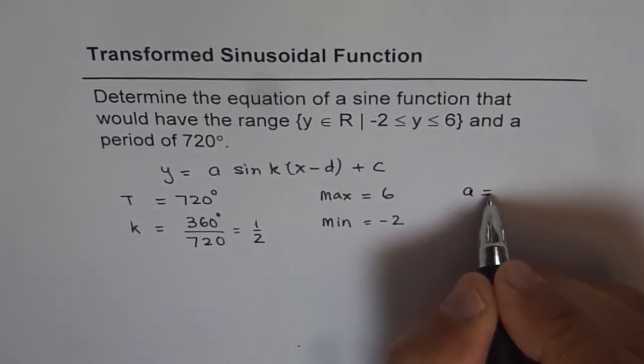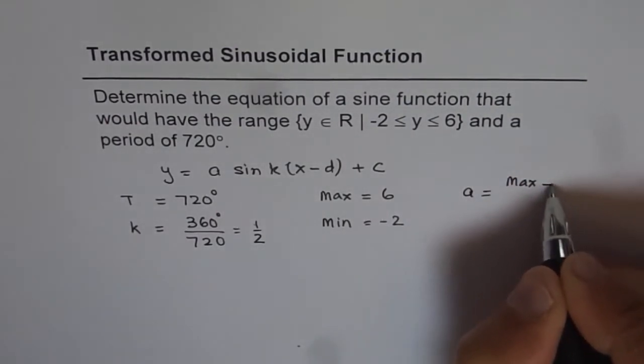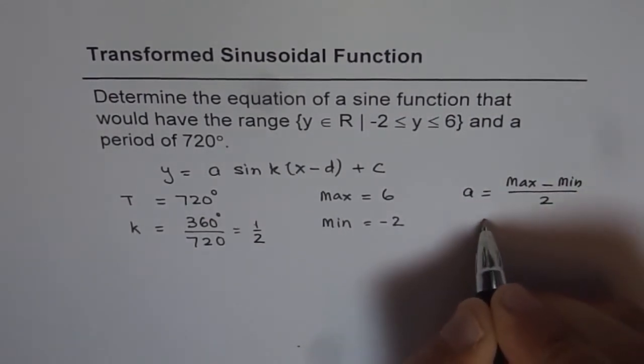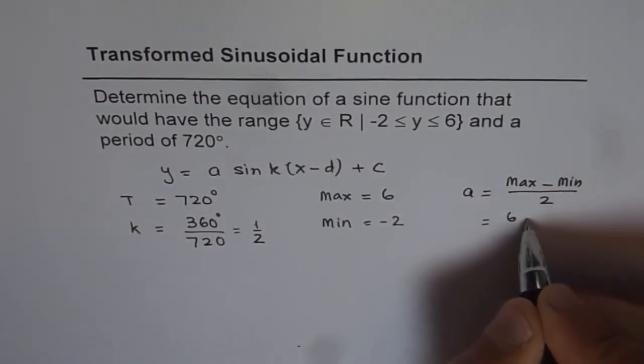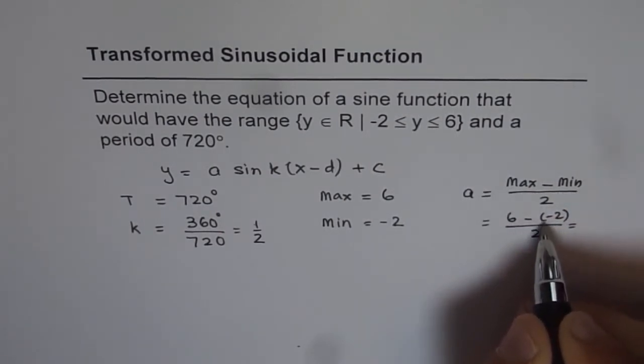So amplitude is equal to difference between maximum and minimum divided by 2. Basically, that is 6 minus minus 2 divided by 2. Max plus minus becomes plus. 6 plus 2 is 8 divided by 2 is 4.